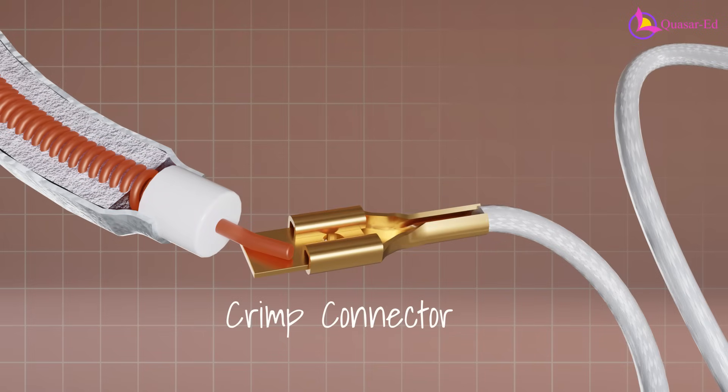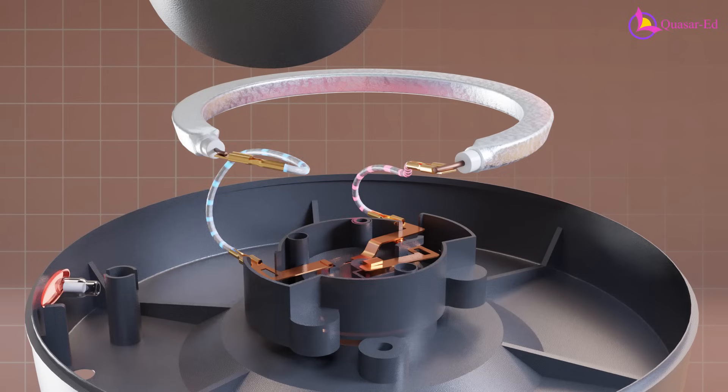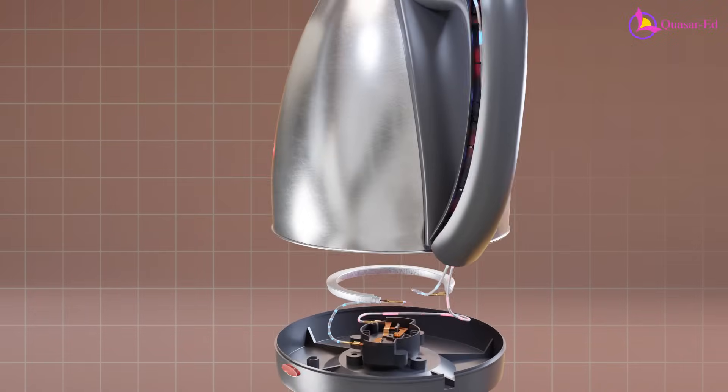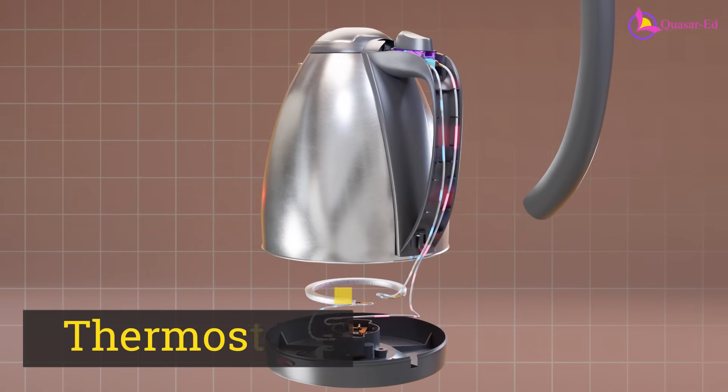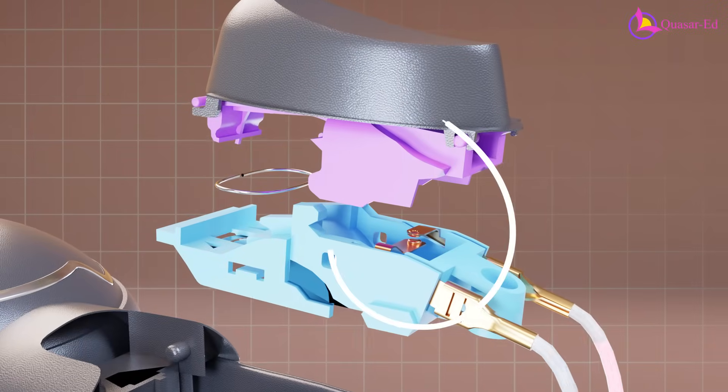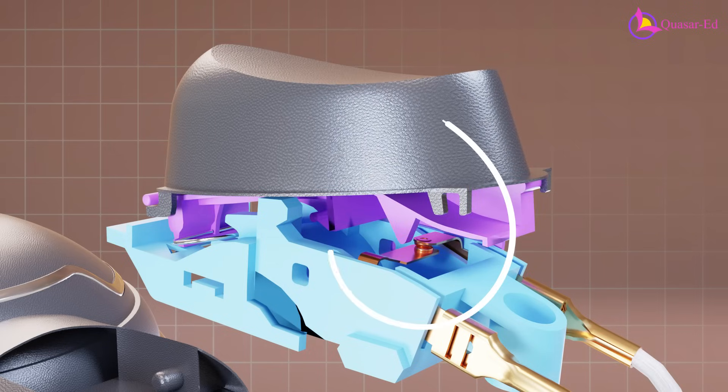Crimp connectors are used to make it easy to connect and disconnect during repairs. Instead of directly connecting the heating element to the outlet, a switch, sometimes called a thermostat, is added over the kettle handle. It consists of a spring and copper contacts that open or close the circuit depending on the switch's position.